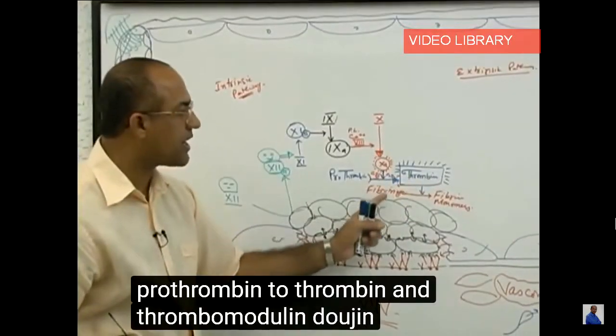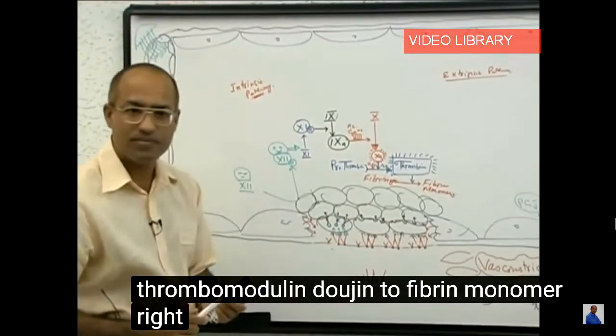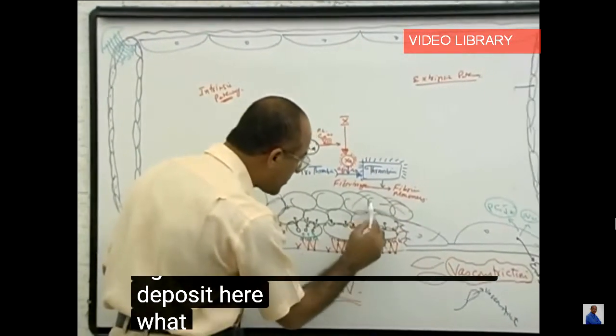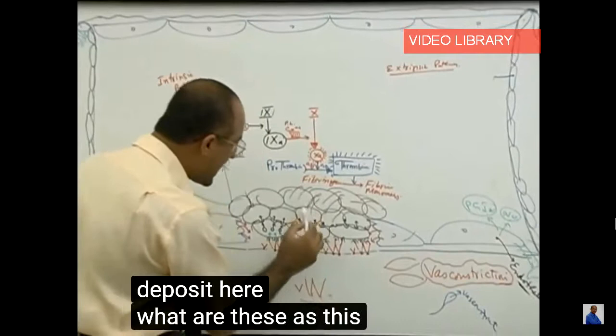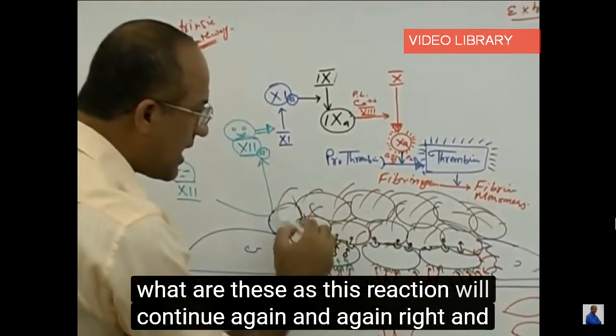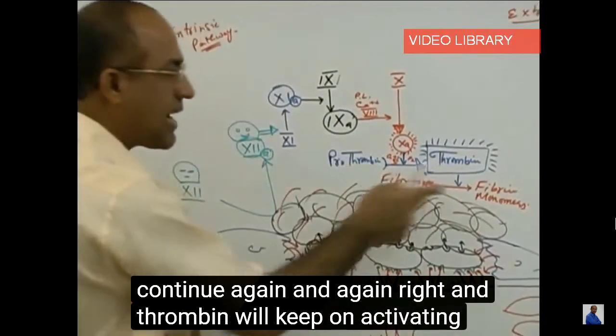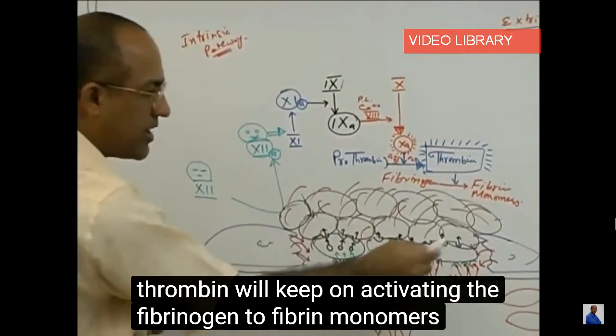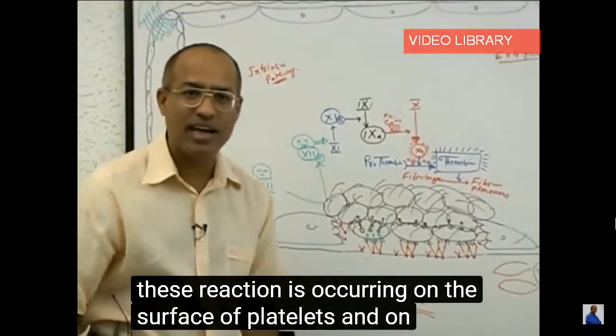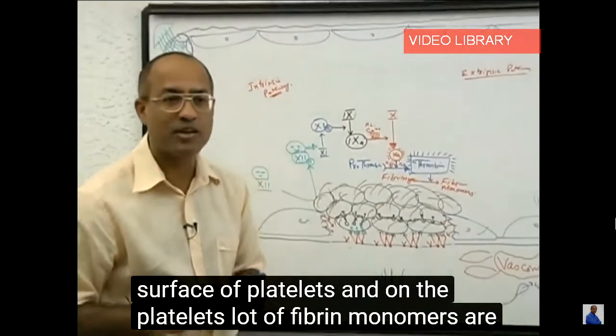Thrombin will break down the fibrinogen into fibrin monomers. And these fibrin monomers will deposit here. As this reaction will continue again and again, thrombin will keep on activating the fibrinogen to fibrin monomers and all these reactions are occurring on the surface of platelets. On the platelets, a lot of fibrin monomers are deposited.